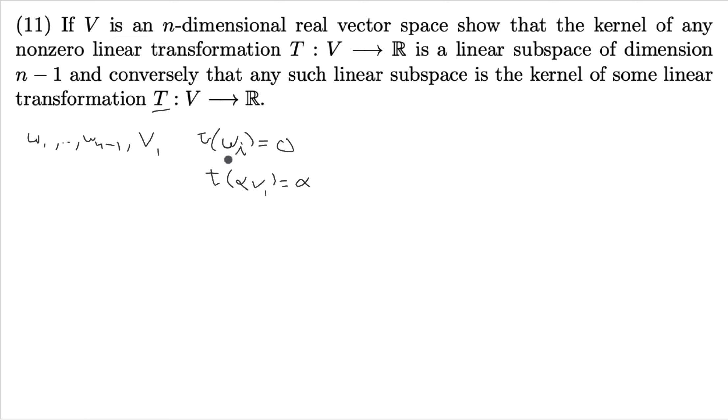We see by construction that the kernel of this map is the entire n minus 1 dimensional subspace. And we see this goes into R because it outputs a scalar. Or if you think about this either as a scalar or alpha times e1, where e1 is just the element 1, is the only basis vector of R, if you consider R as a vector space for a second.